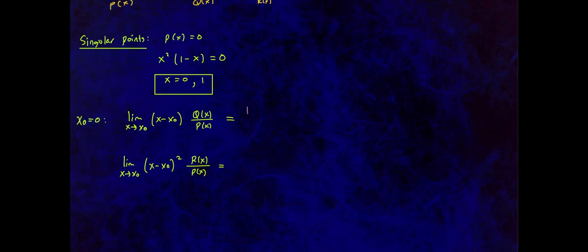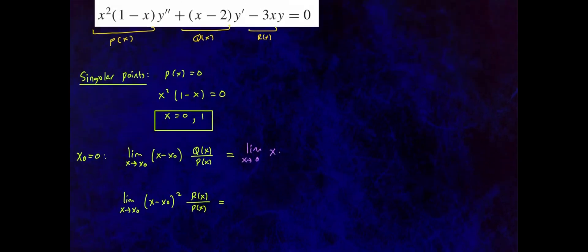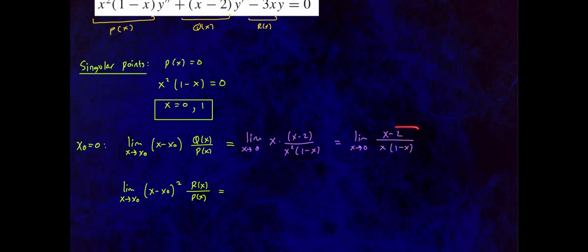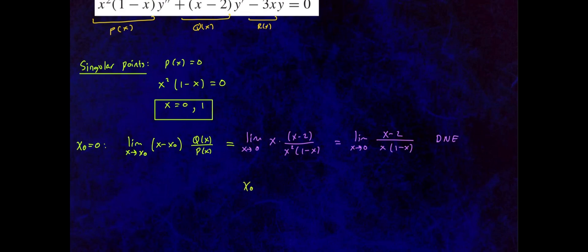Substituting: the limit as x approaches 0 of x times (x minus 2) over [x squared times (1 minus x)]. Canceling a factor of x gives the limit of (x minus 2) over [x times (1 minus x)]. There is no algebraic simplification, and direct substitution produces a zero denominator, so this limit does not exist. Therefore there is no need to compute the second limit — x0 equals 0 is an irregular singular point.